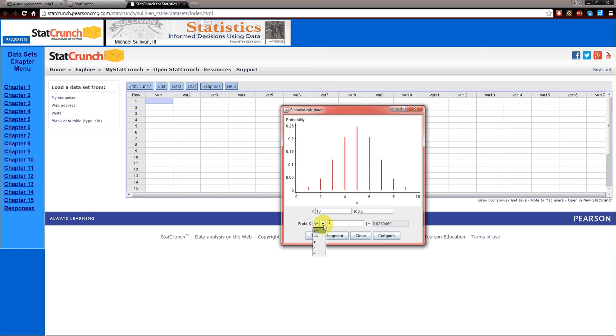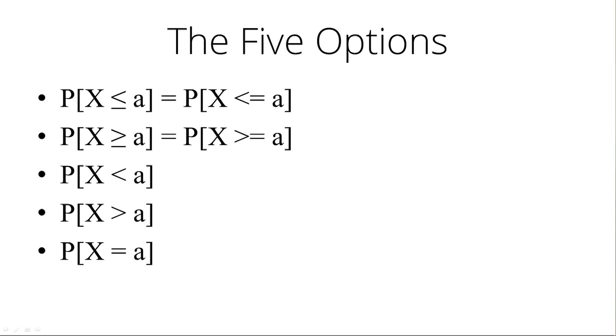And we've got five possible directions. Less than or equal to, greater than or equal to, less than, greater than, or equal to. And those are the five options that StatCrunch gives us. This is what it would look like typed in a book. Less than or equal to, greater than or equal to. This is the corresponding in StatCrunch. Less than, equal to, greater than.